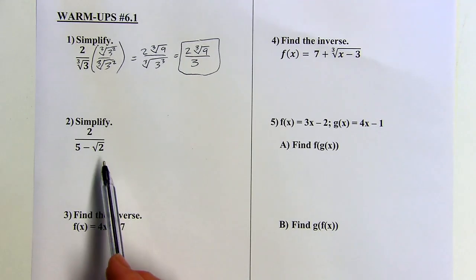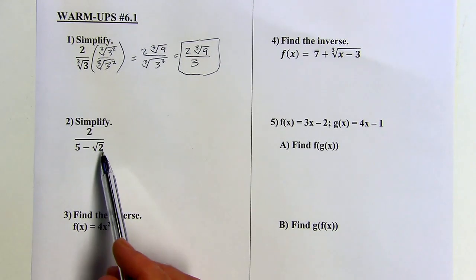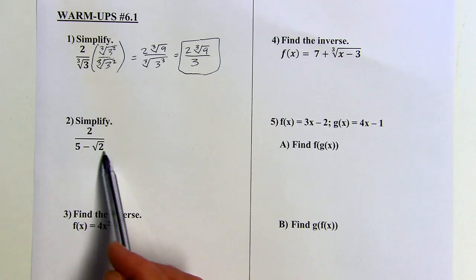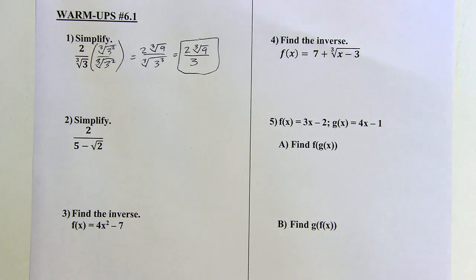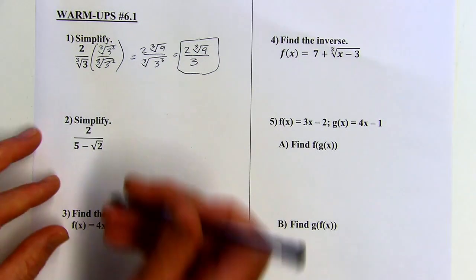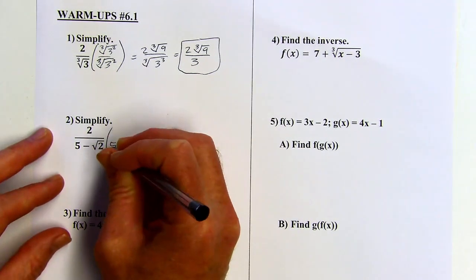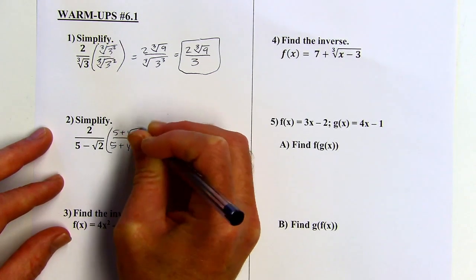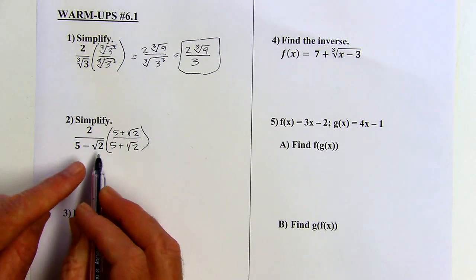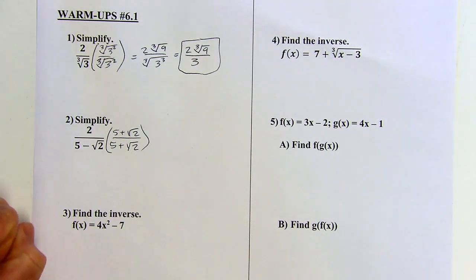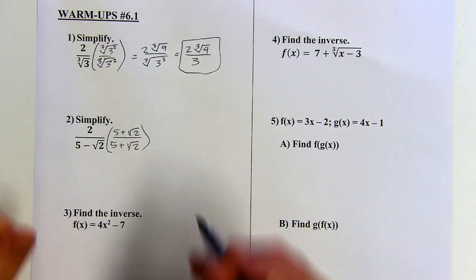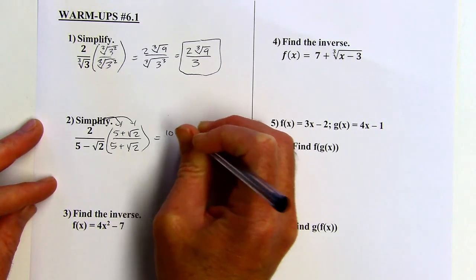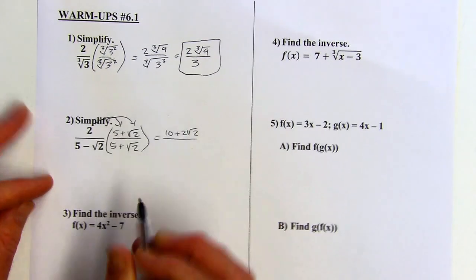All right, second problem. We've got a radical in the denominator again. If you just multiply by root 2 over root 2, it's not going to work, because you'd have to distribute the root 2 and multiply both these pieces by root 2, so you'd still have a square root in the denominator. So when you've got a situation like this, you want to multiply by the conjugate of the denominator, and the conjugate of 5 minus root 2 is 5 plus root 2. You just change the sign of the radical part. And then I'm going to distribute the 2 in the numerator, so that would be 10 plus 2 root 2. In the denominator, I'm going to FOIL.